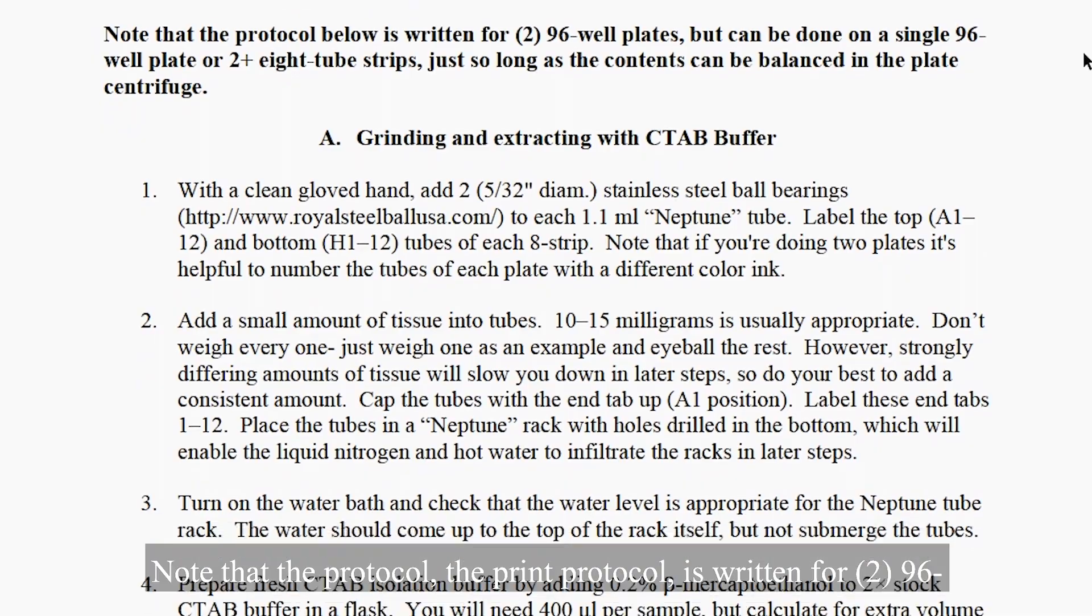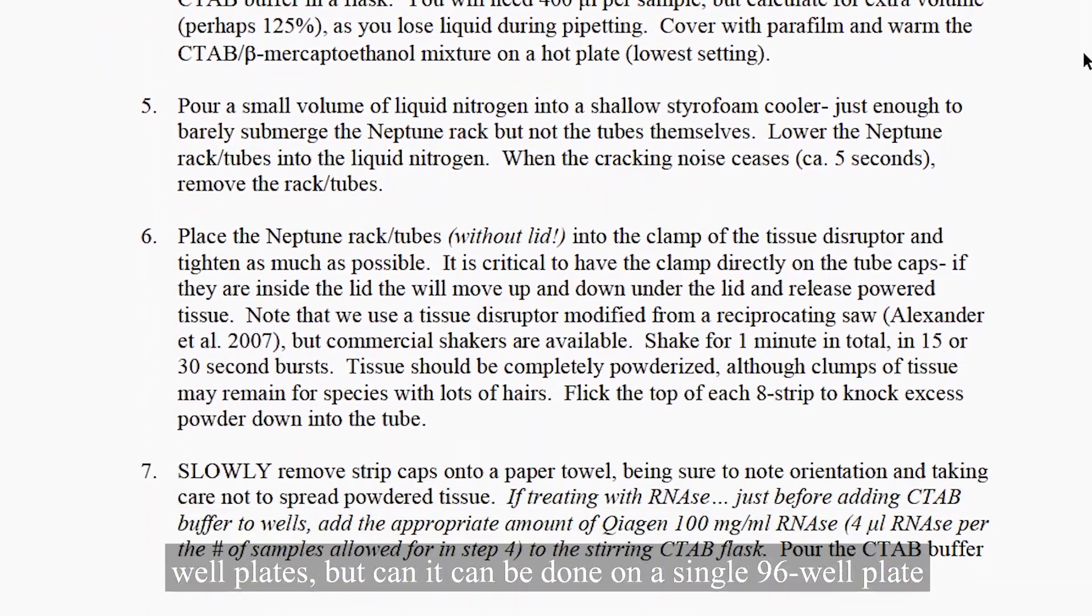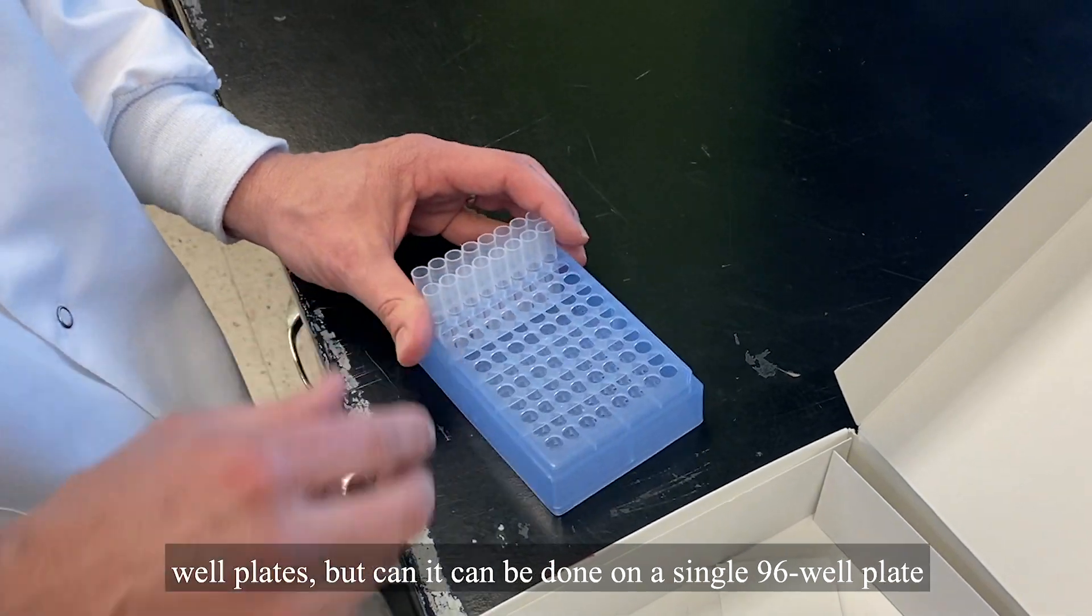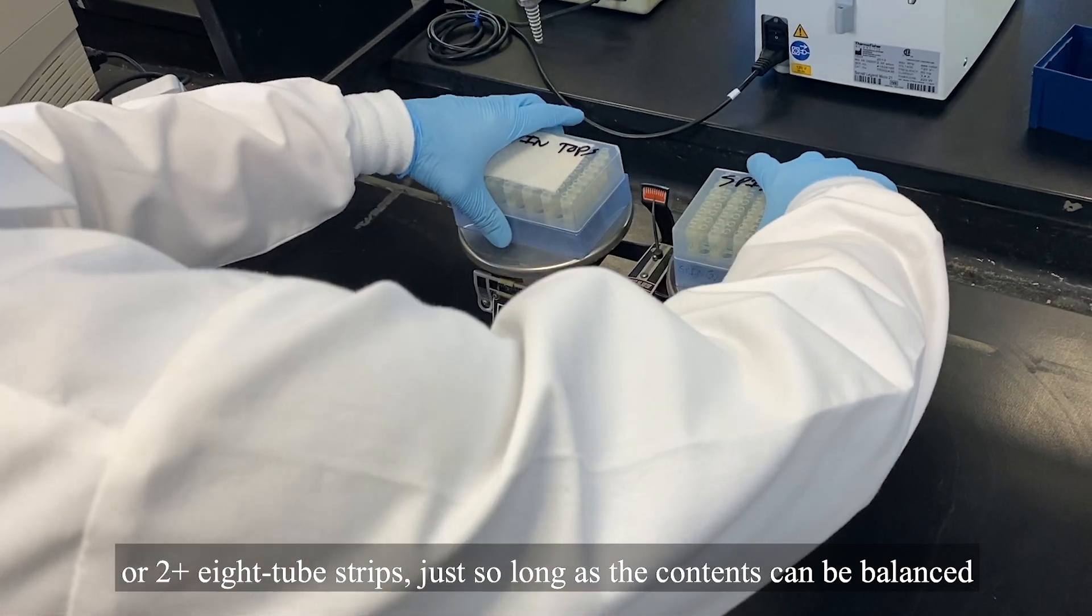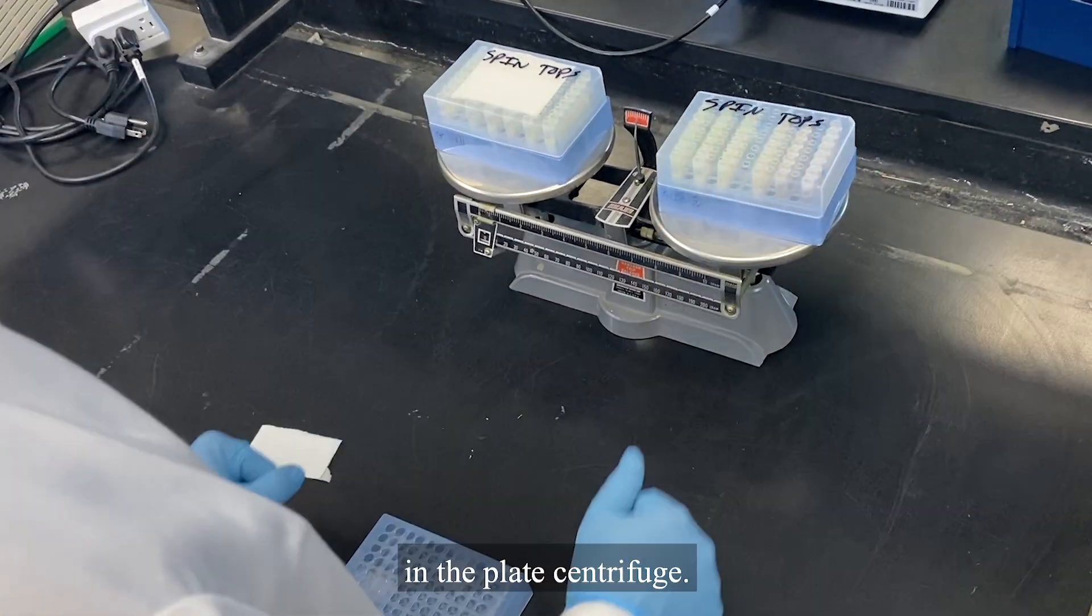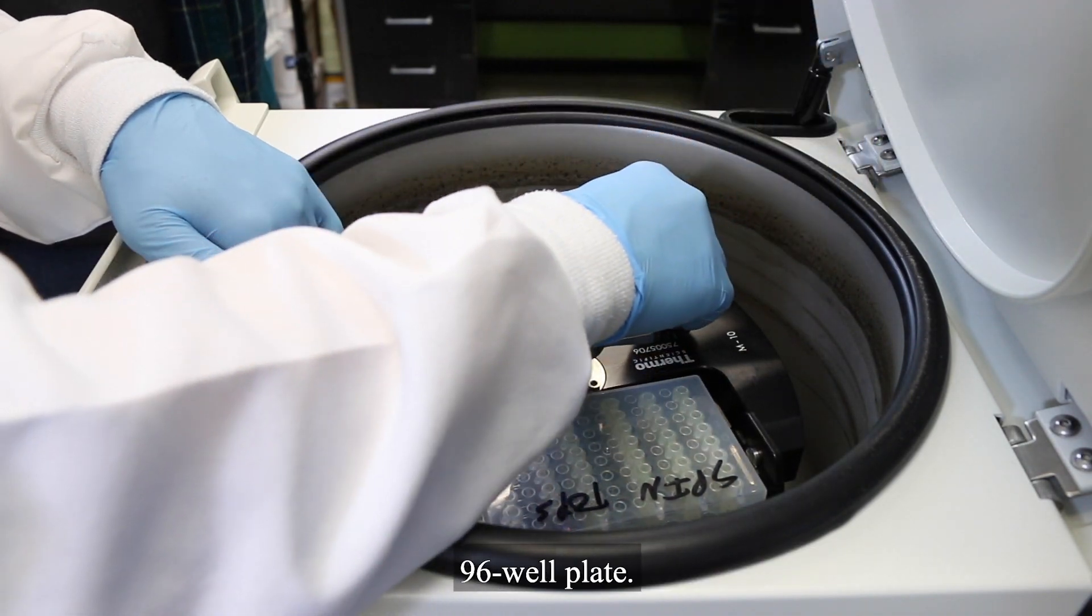Note that the protocol, the print protocol, is written for two 96-well plates, but it can be done on a single 96-well plate or two plus eight tube strips, just so long as the contents can be balanced in the plate centrifuge. In the video version of the protocol, we're doing it on a single 96-well plate.